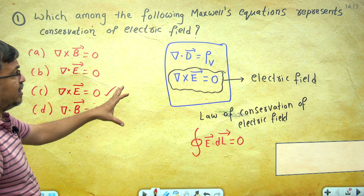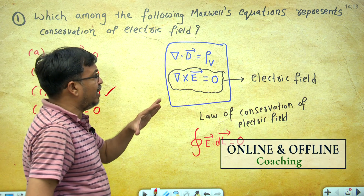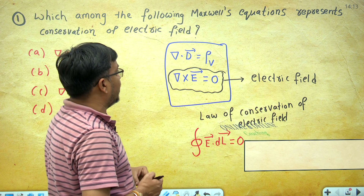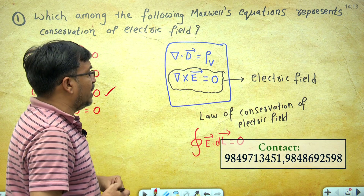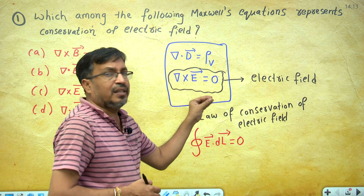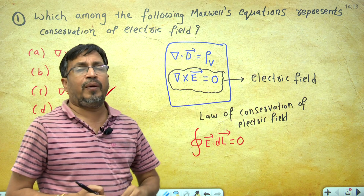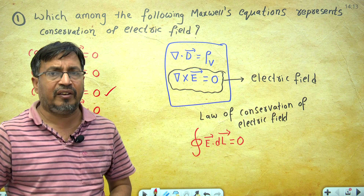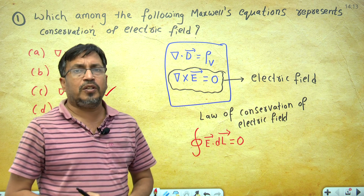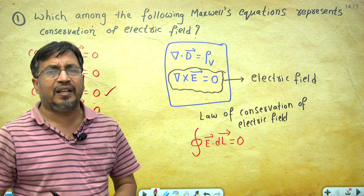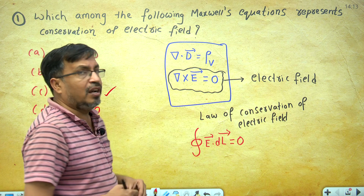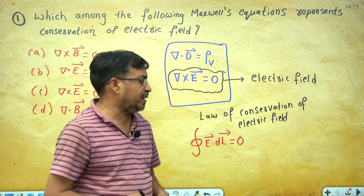To summarize: there are two Maxwell's equations in electric field. The first is divergence of D equals rho_V, and the second is curl E equals 0. This second equation is derived from the law of conservation of electric field. The same equation in integral form is the closed-loop line integral of E dot dL equals 0. So the first question's answer is option C.